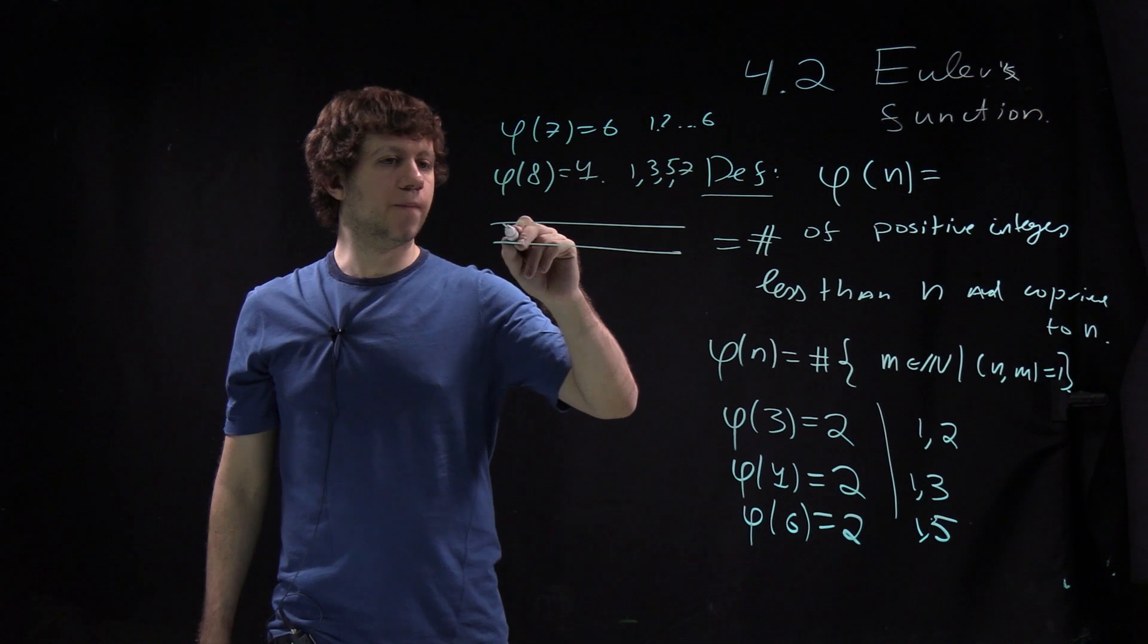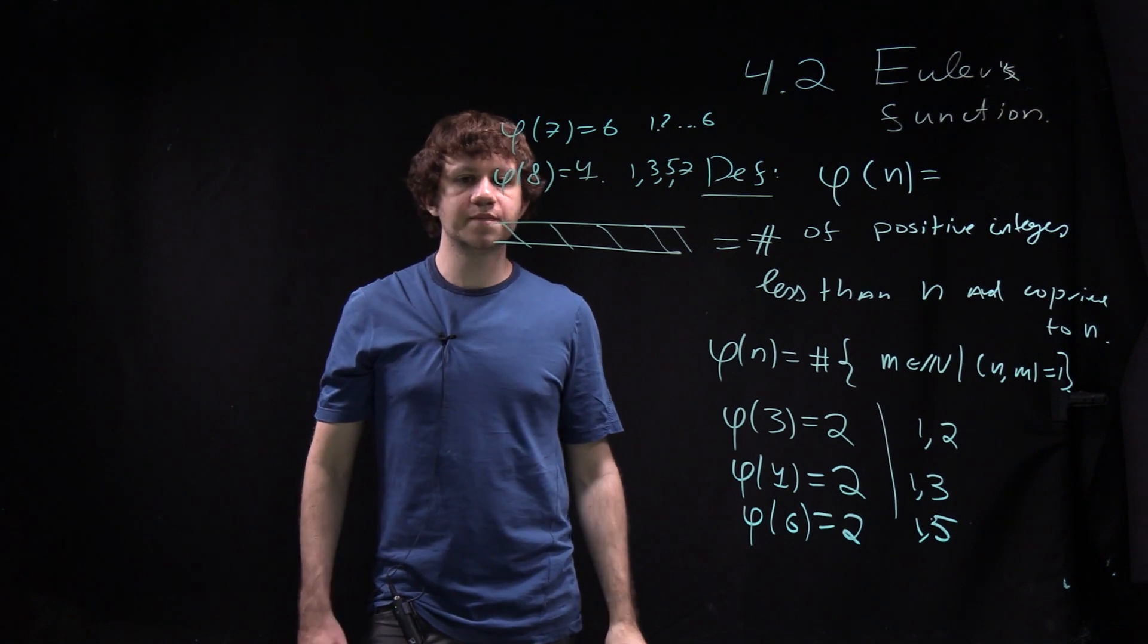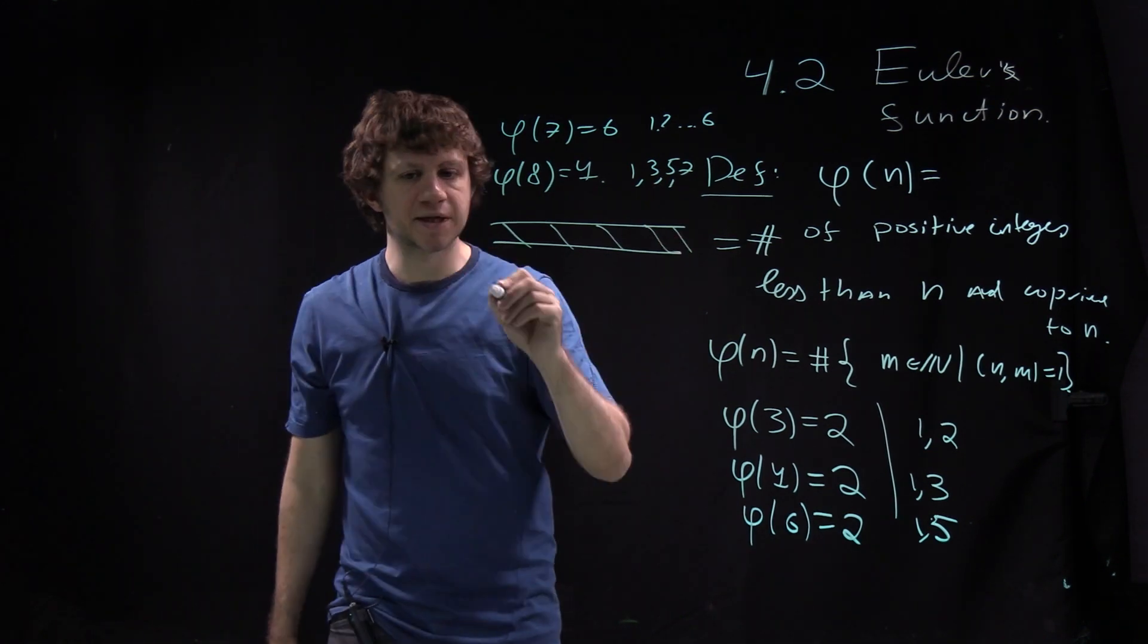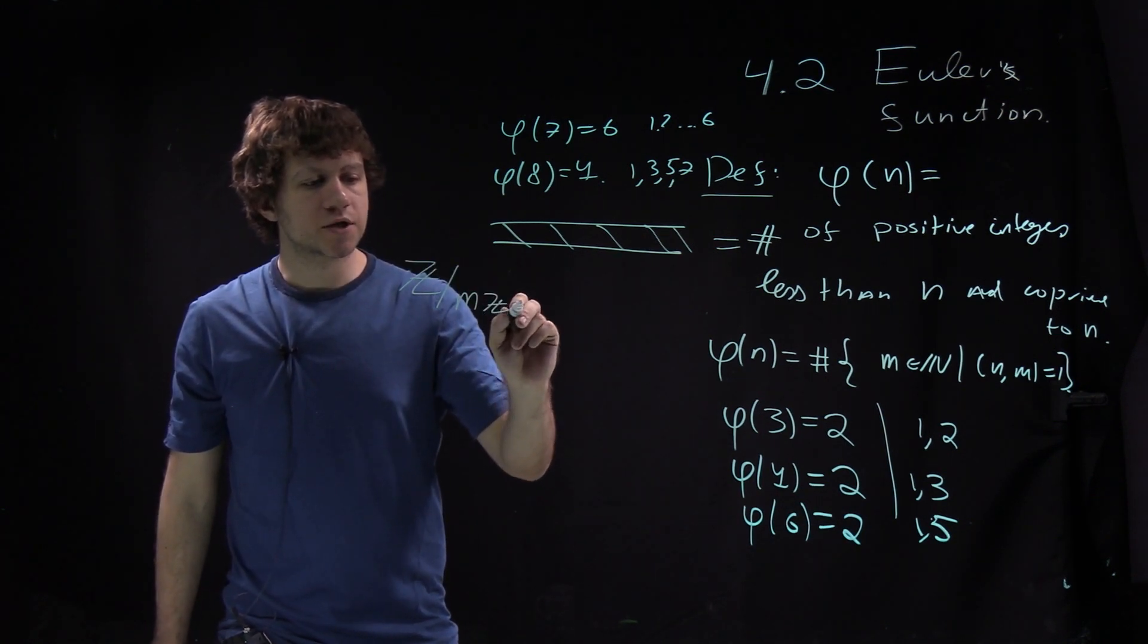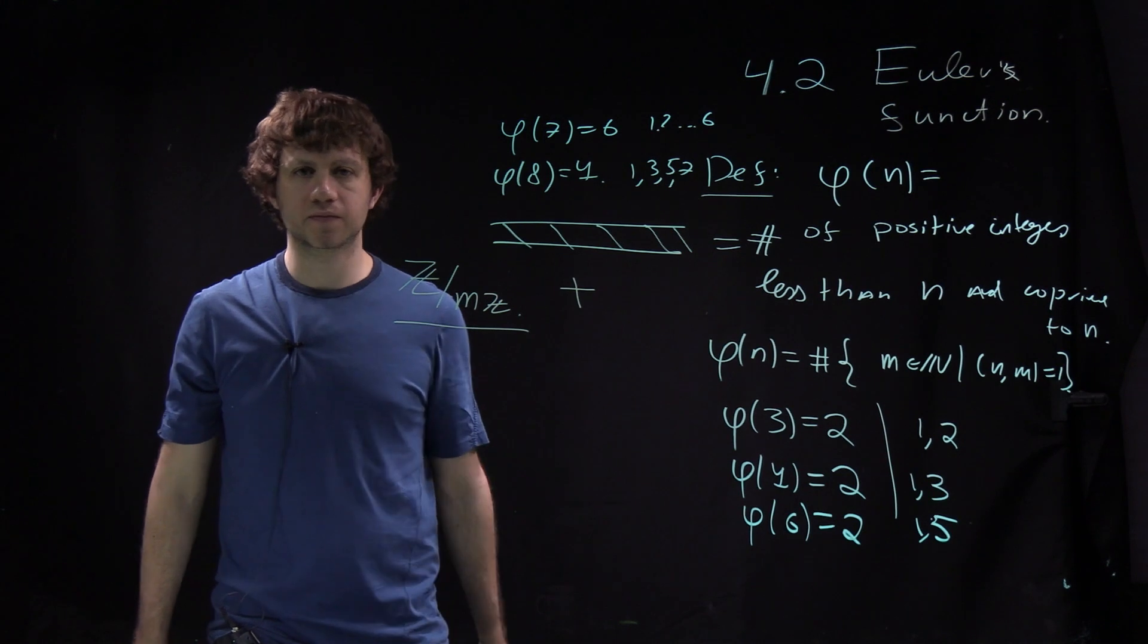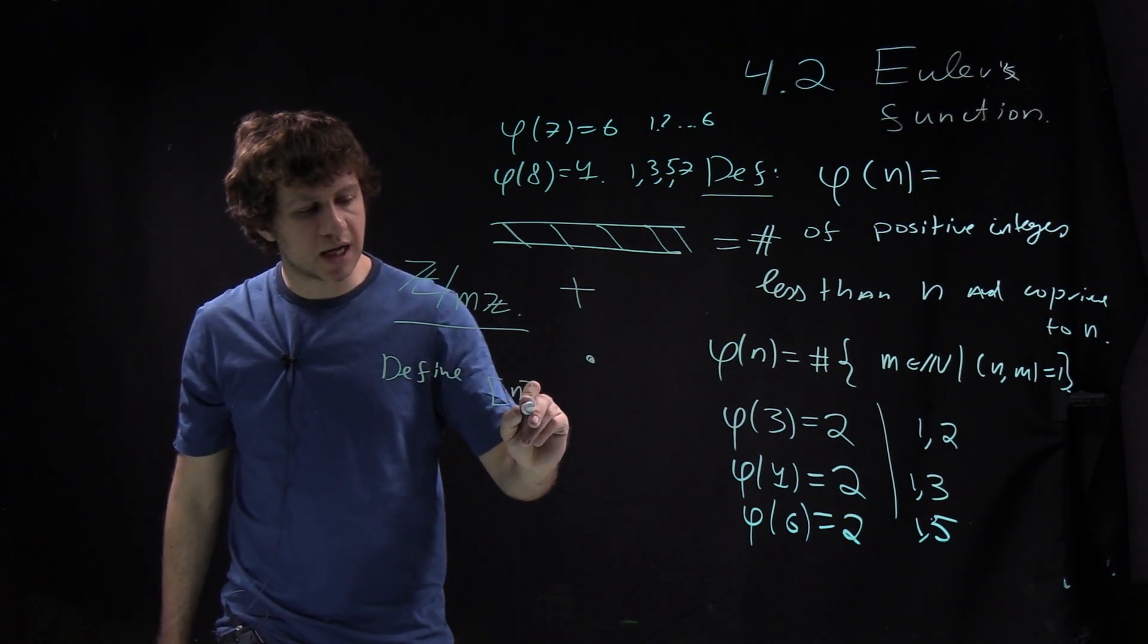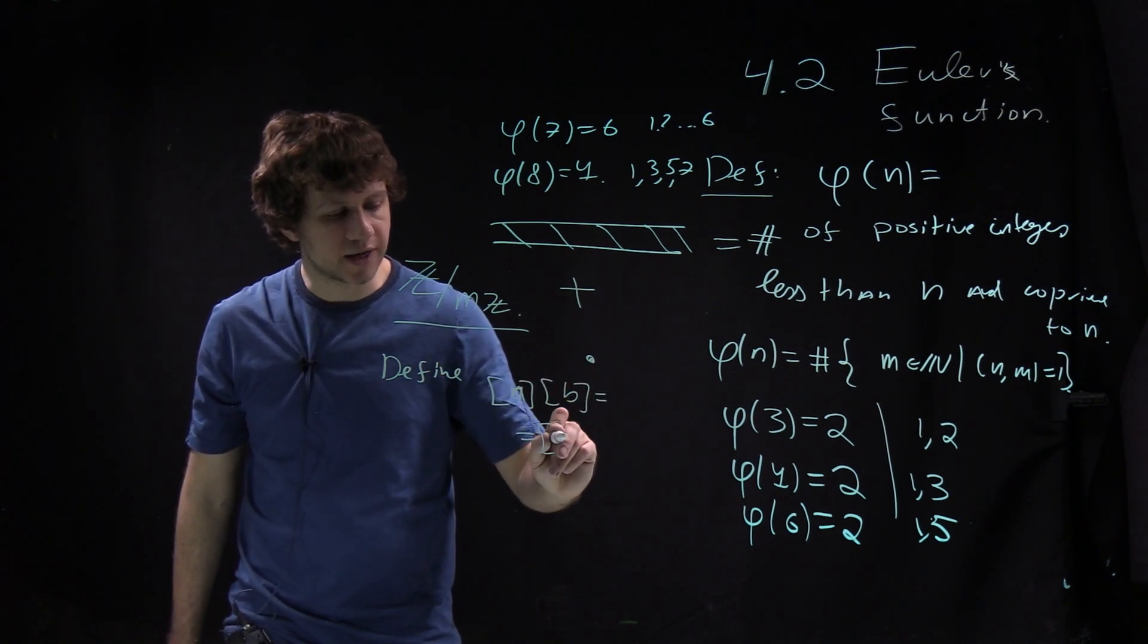Why do we care about Euler's function? Let me immediately explain the fundamental reason. Consider Z over mZ. There are two operations here. It's an abelian group, as we discussed, but also one can multiply there.